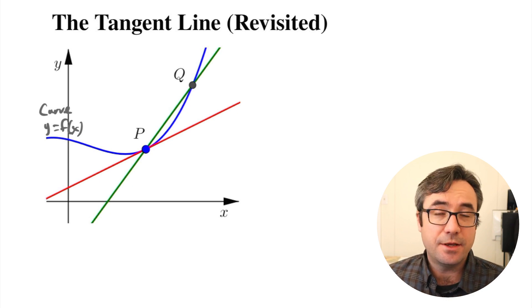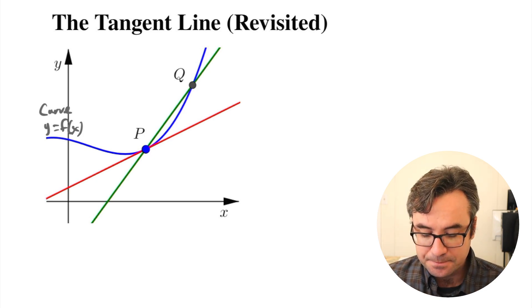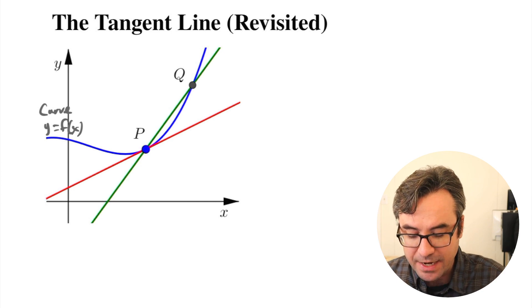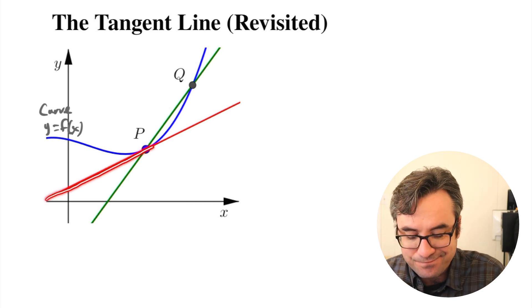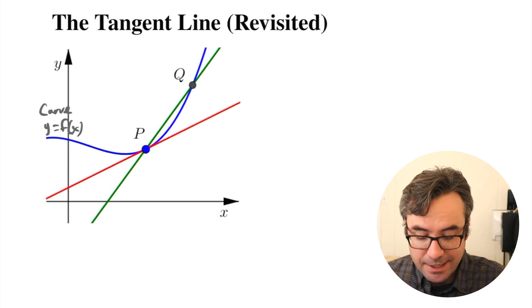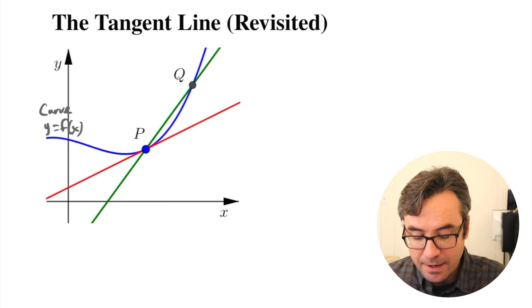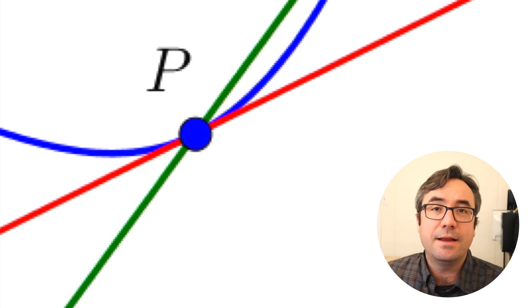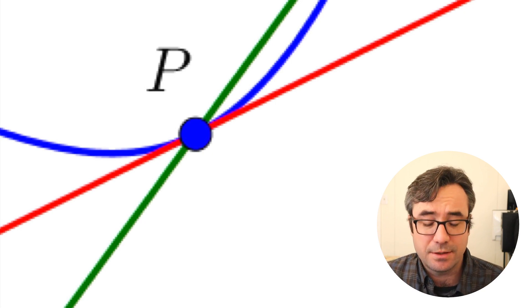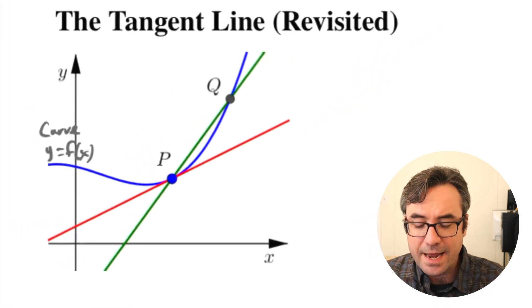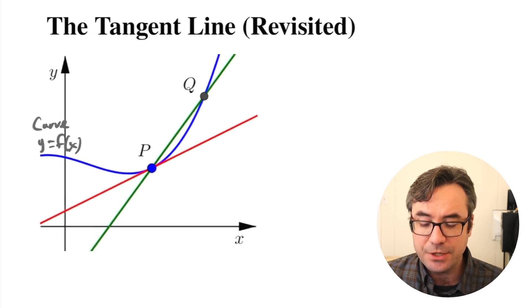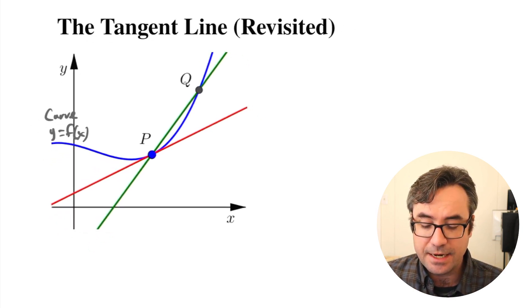Normally when we find a line, we need to know two points. We've seen how to estimate the tangent line — it should just barely touch the curve, and if you zoom in closer and closer to that point of tangency, the curve and the line are going in the same direction. But the question is, how do we find the tangent line exactly?